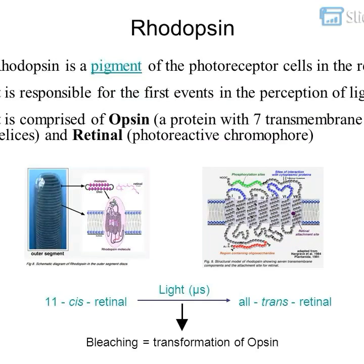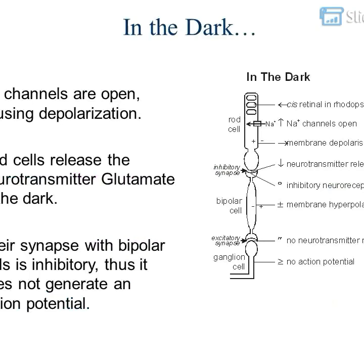In the presence of light, 11-cis retinol is converted to all-trans retinol in microseconds — a process called bleaching, which equals the transformation of opsin. In the dark, channels are open, causing depolarization, and rod cells release the neurotransmitter glutamate.